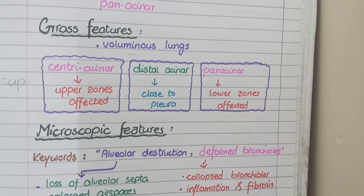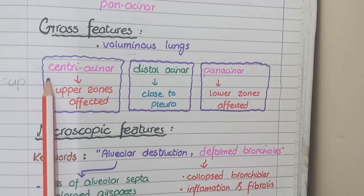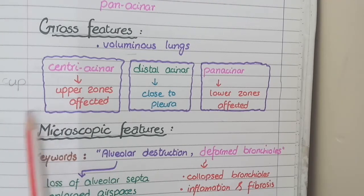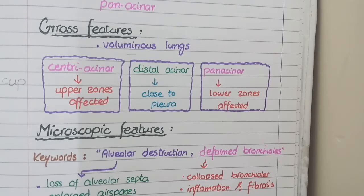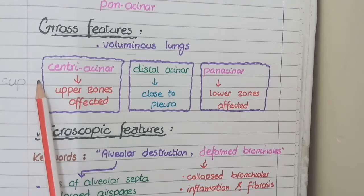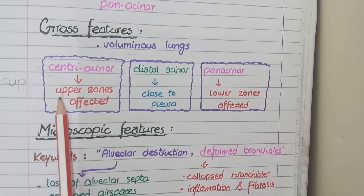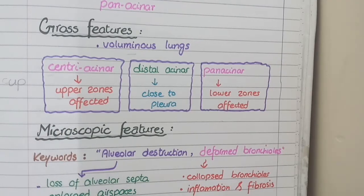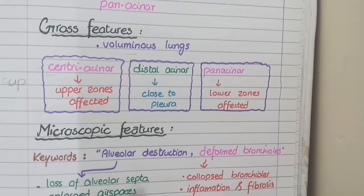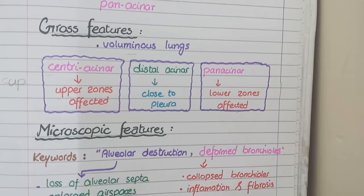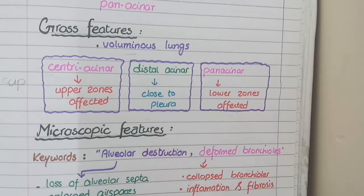A point that students often confuse is that centriacinar emphysema affects the upper part and panacinar emphysema affects the lower part of the lung. The trick to remember this is the word CUP — C stands for centriacinar emphysema and UP stands for upper zones of the lungs. So centriacinar emphysema affects the upper zone of lungs, panacinar emphysema affects the lower zones, and distal acinar emphysema affects the distal parts close to the pleural membrane.